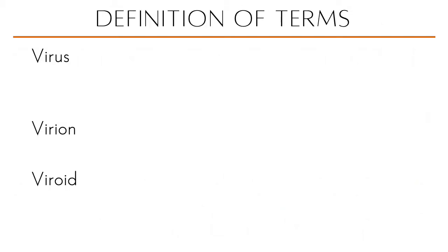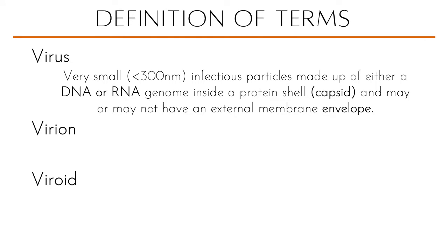What is the difference between a virus, a virion, and a viroid? Viruses are very small — usually less than 300 nanometers — infectious particles. Viruses are not cells; they are made up of either a DNA or RNA genome inside a protein shell which we call a capsid. Viruses may or may not have an external membrane which we call an envelope. We will discuss morphology and classification of viruses in the next lecture.